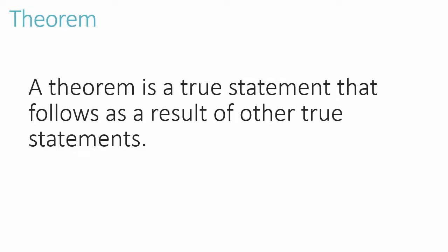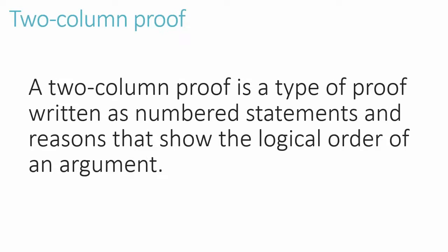Our first vocabulary word is theorem. A theorem is a true statement that follows as a result of other true statements. Two-column proof: a two-column proof is a type of proof written as numbered statements and reasons that show the logical order of an argument.